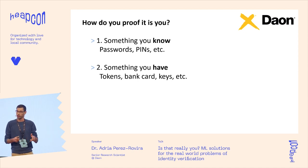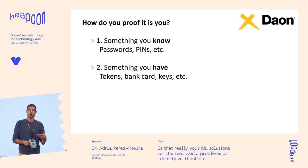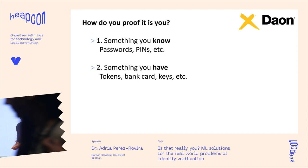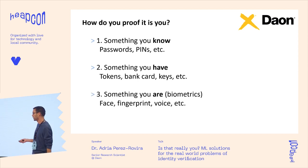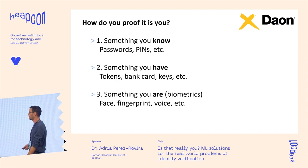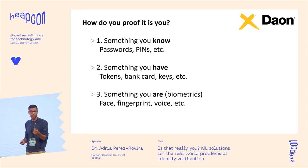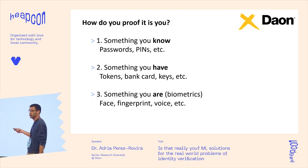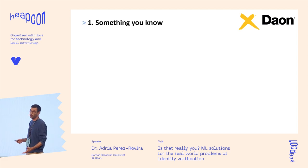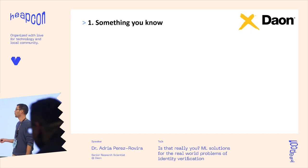A lot of times when you log in and check two-factor authentication, you get a push notification, and what you're doing is showing your identity because you're the owner of that phone. And finally there's a third way — something you are — and that's biometrics. That can be face verification, fingerprint — the one you're very familiar with on your mobile phones — voice, and a lot more.